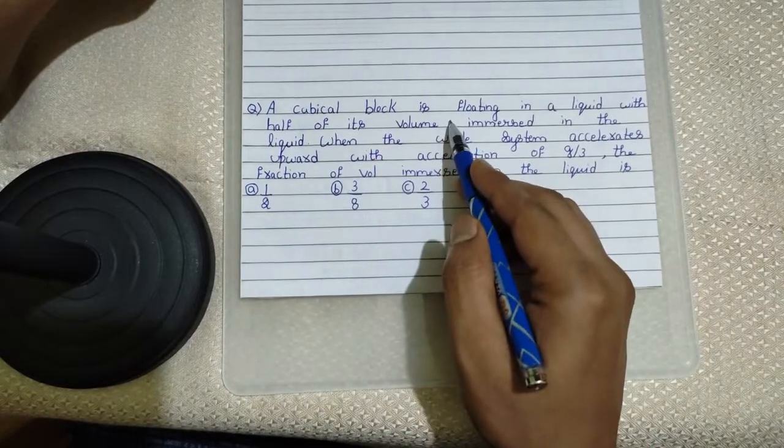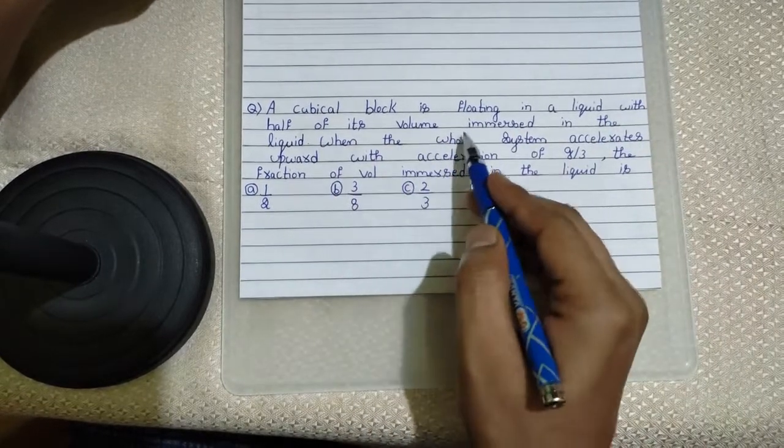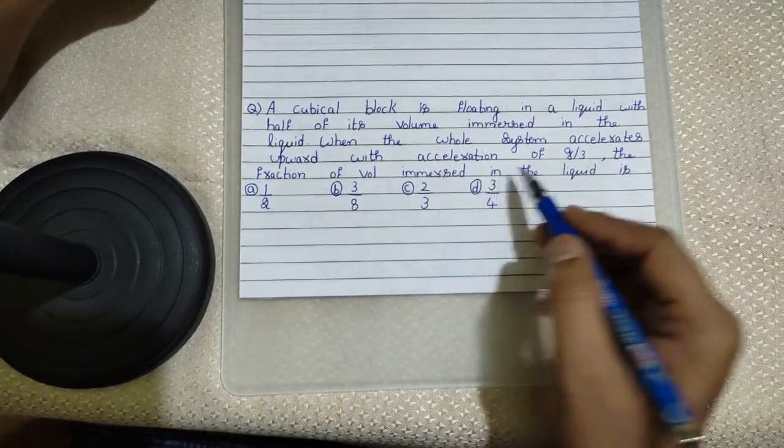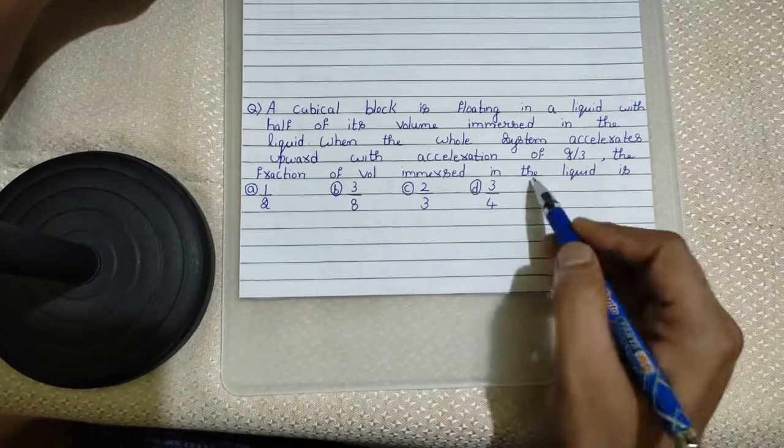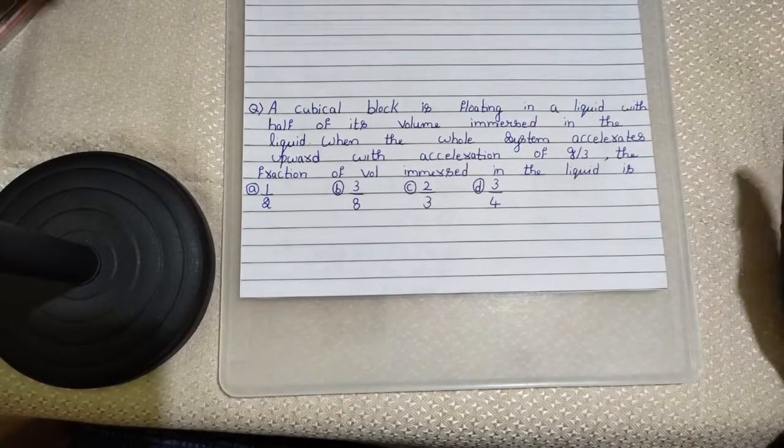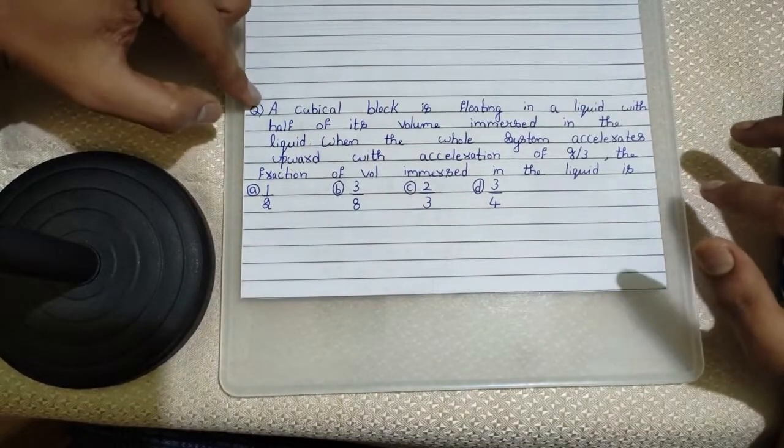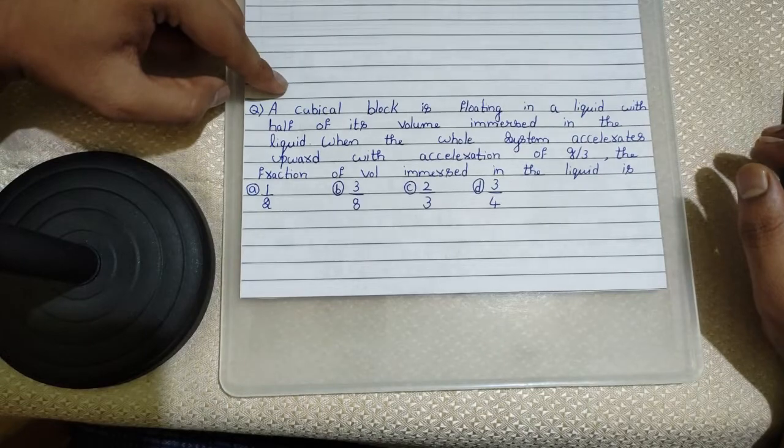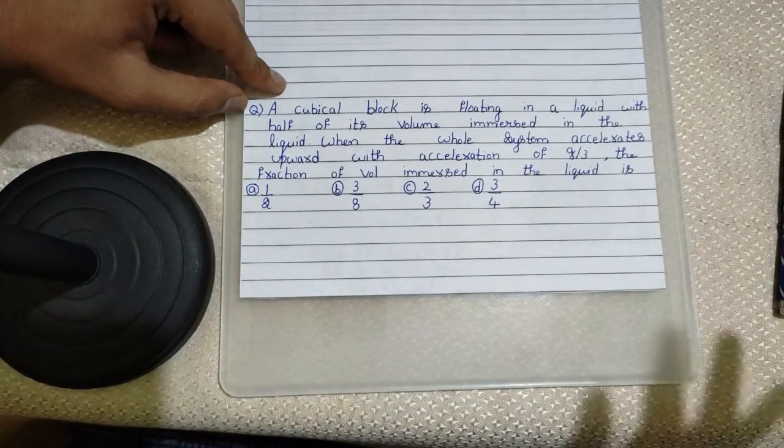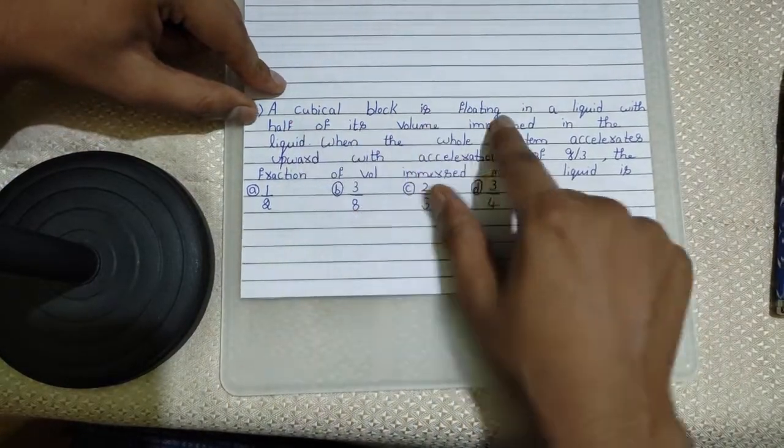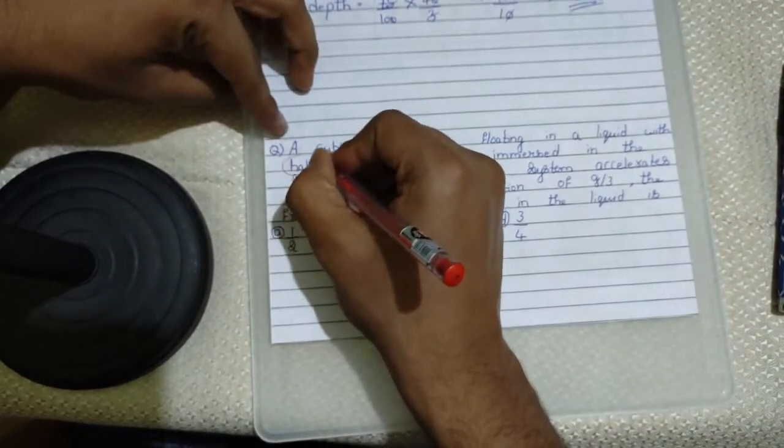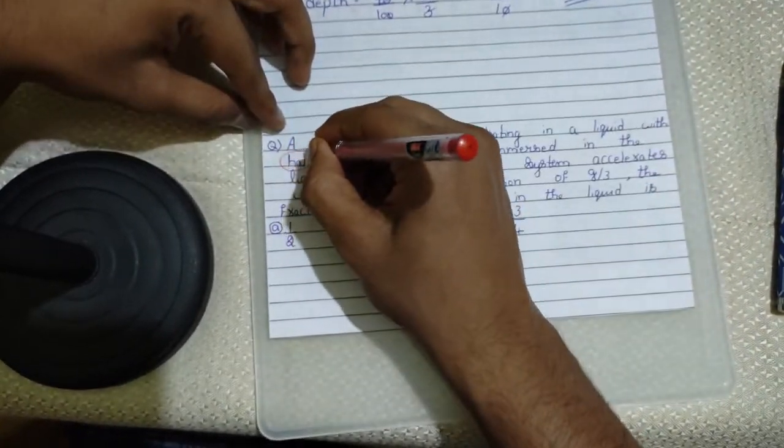A cubical block is floating in a liquid with half of its volume immersed in the liquid when the whole system is accelerated upward with acceleration of g by 3. The fraction of volume immersed in liquid. Keep your pen inside. No need of pen in this question. Whatever they have given in the question, answer lies in the question itself. Look at this question carefully. A cubical block is floating in a liquid with half. Note this word: half.